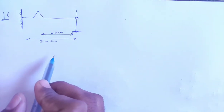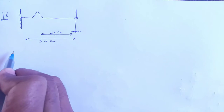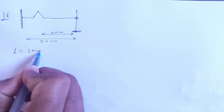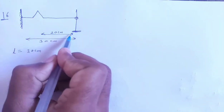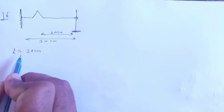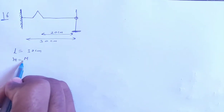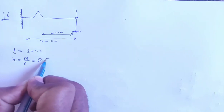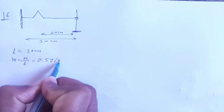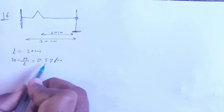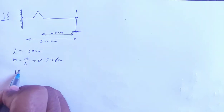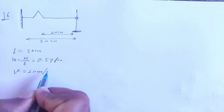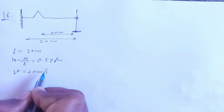First, let's look at the given data. Length of string is 30 cm. The pulse's distance from the ring end is 20 cm. Mass per unit length (M/L) is given as 0.5 gram per centimeter. Speed given is 20 cm per second.